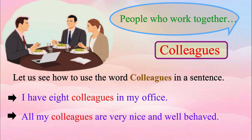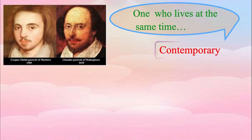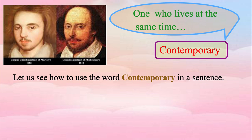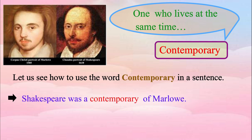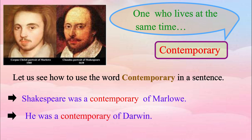Let us see the next expression: one who lives at the same time — or we can simply say contemporary. Contemporaries are people belonging to or living at the same time, age, or period. In English class, if you hear that one famous writer was a contemporary of another, that means they lived at the same time. Please repeat after me: Shakespeare was a contemporary of Marlowe. He was a contemporary of Darwin.